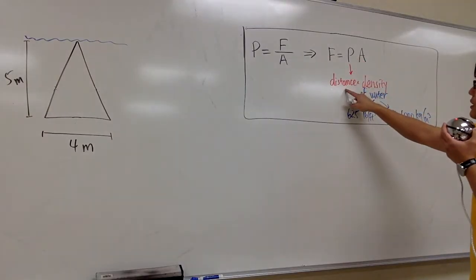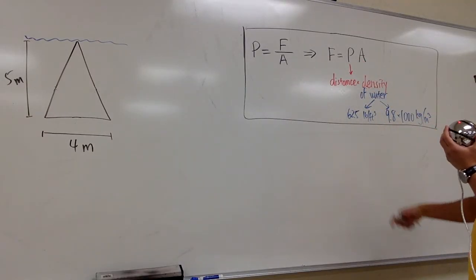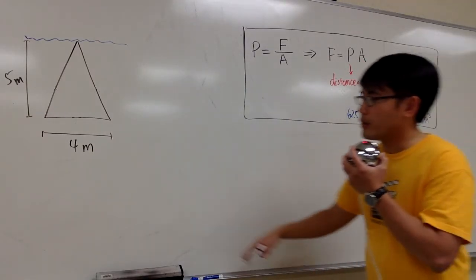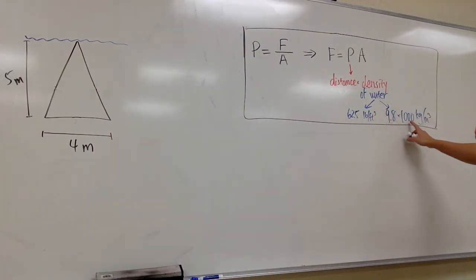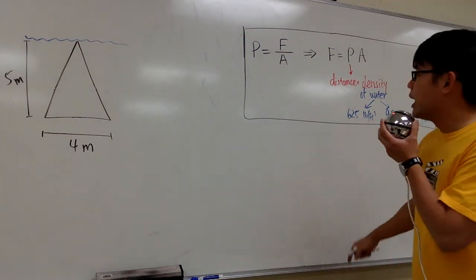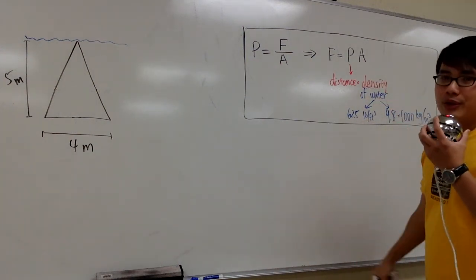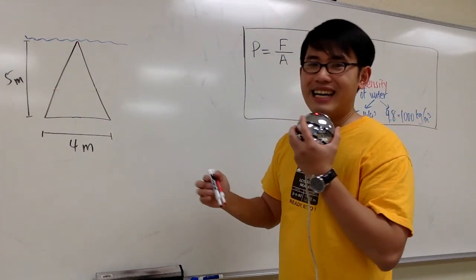The pressure is going to be distance times density, and we're talking about water and meters. So we are going to use 9.8 times 1,000 for the density of the water, and the area is usually the harder part. Let's begin with that.